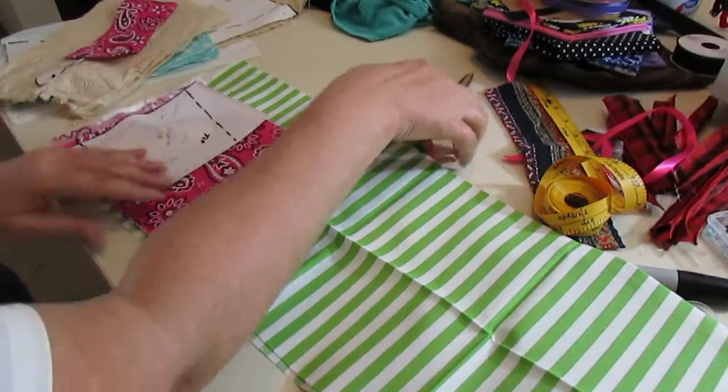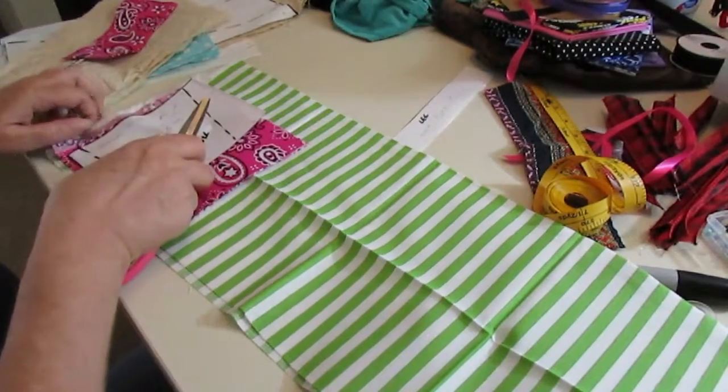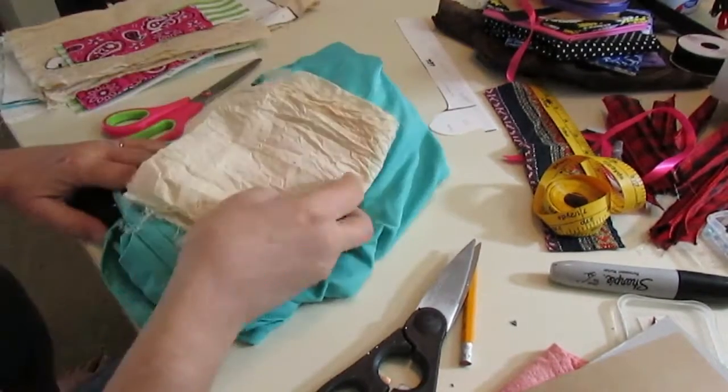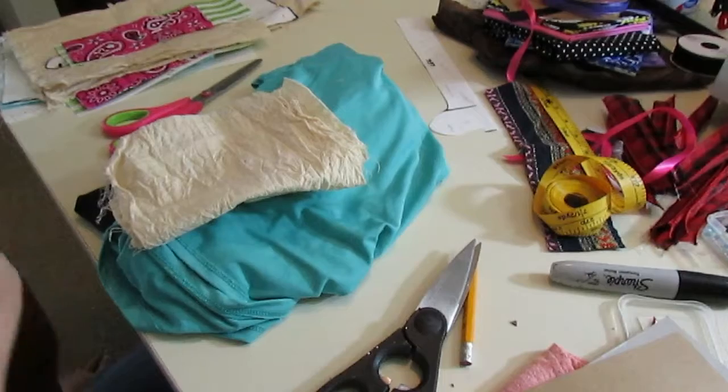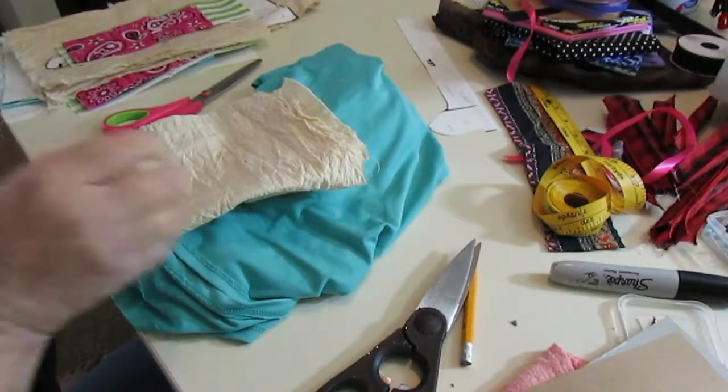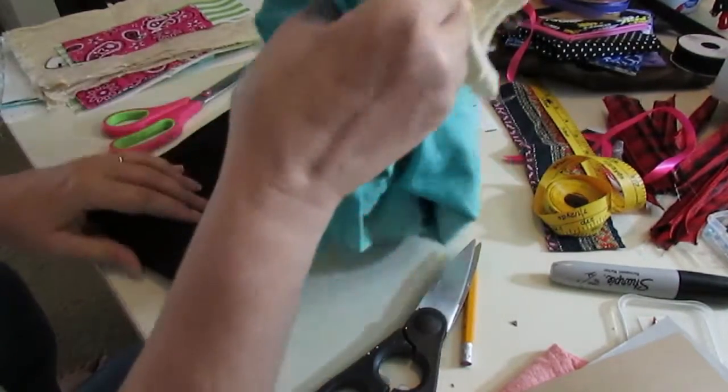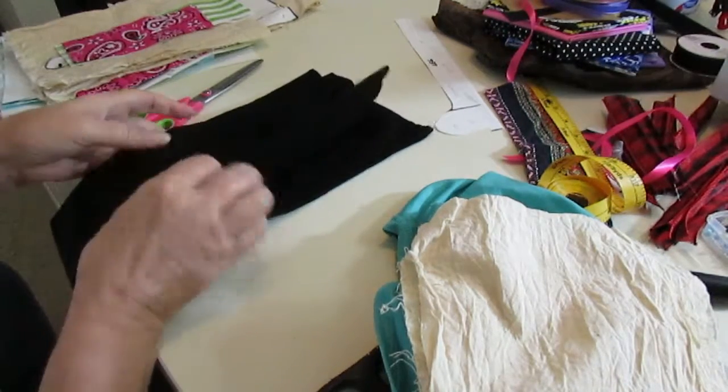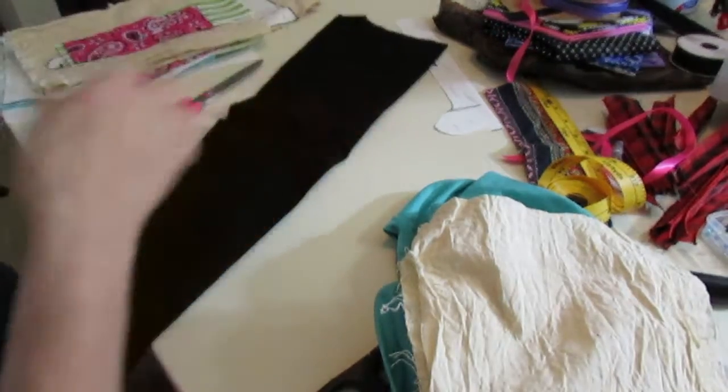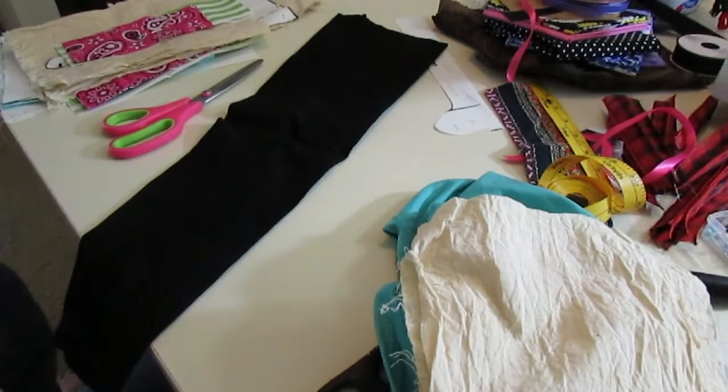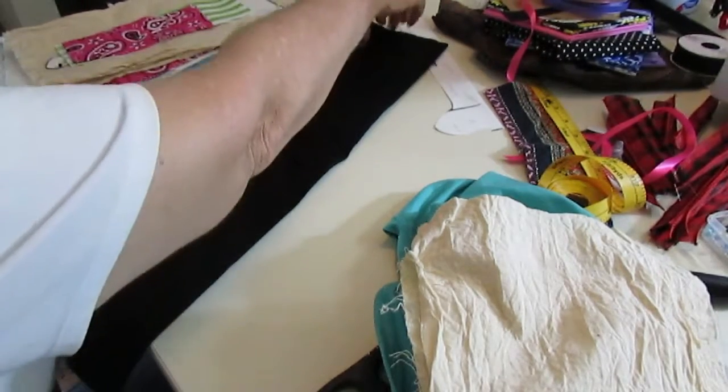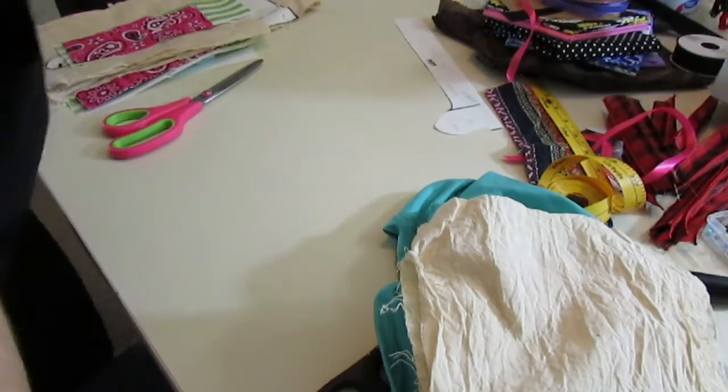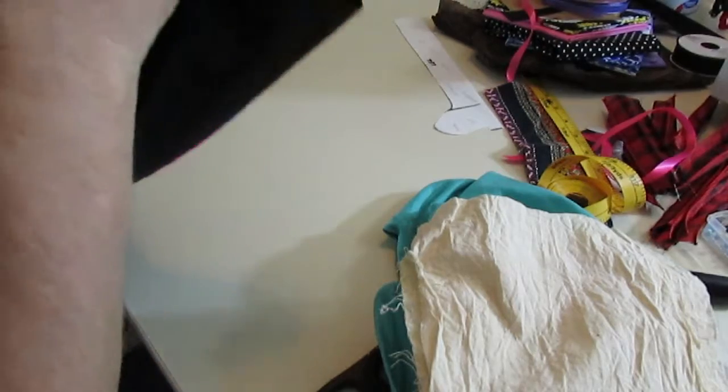For the shoe and the leg I have three separate fabrics. I have the black stretch jean denim material that I'm using for the shoe, the muslin for the leg, and the jersey knit for stockings that go over the top of the leg.